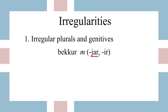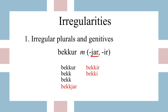Here's one more example: the word 'bekkur' meaning 'a bench'. The genitive has -jar as the ending, so instead of 'becks' as you'd expect, we have 'bekkjar'. It also has an irregular plural with -ir: 'bekkir' and 'becki'. We also see what's called j-insertion on the dative and genitive forms, which happens because the k followed by the i in the plural — 'bekkir' — creates that j sound, and that gets carried through the dative and the genitive.